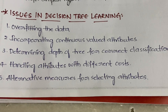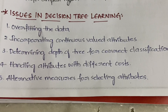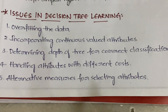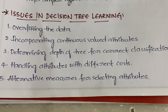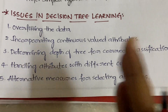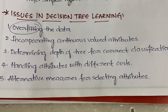The first issue is overfitting of the data. We are depending too much on the training data — calculating information gain, entropy, and overall gain, and constructing the decision tree based solely on training examples. When you depend too much on training examples, overfitting occurs.